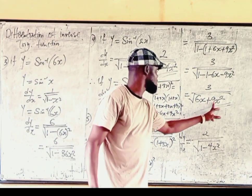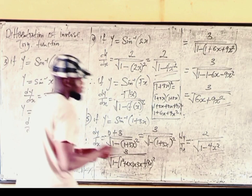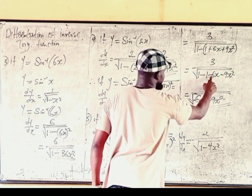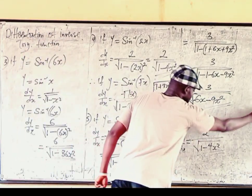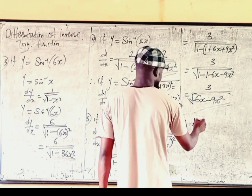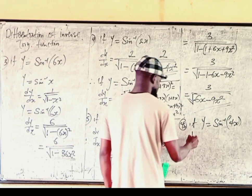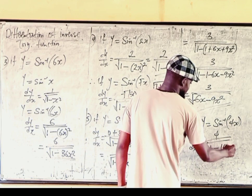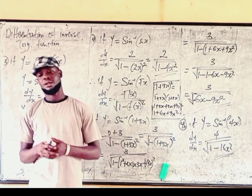Note that 3 is common in the expression under the square root, but you cannot factor it out because of the square root. So that is the final answer. You can also try question 4: if y equals sin inverse of 4x to the power 6, find dy over dx. God bless you — see you in the next class. Thank you.